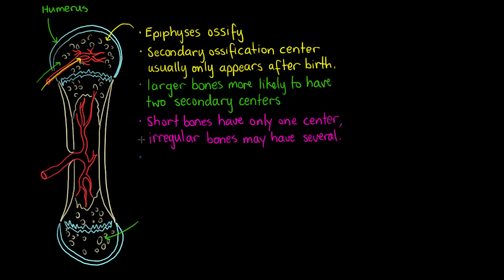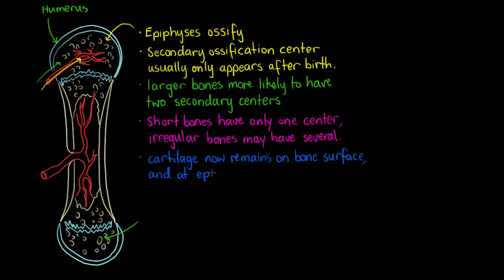Examining the bone after birth, cartilage only remains on the surfaces of the bone and at the epiphyseal plates. Within those ossification centres you get spongy bone within the epiphyses where red marrow is stored. The articular cartilage on the surface of the bone protects and lubricates joints to aid in movement, and cartilage within the epiphyseal plates plays an important role in growth to be discussed in another video.